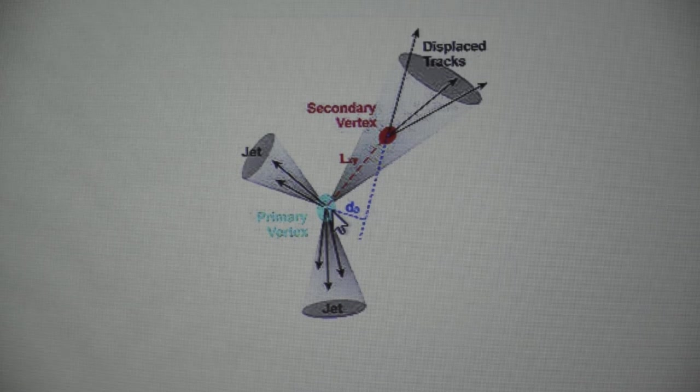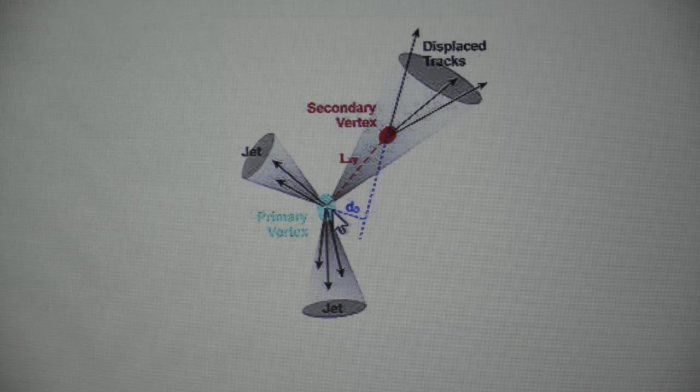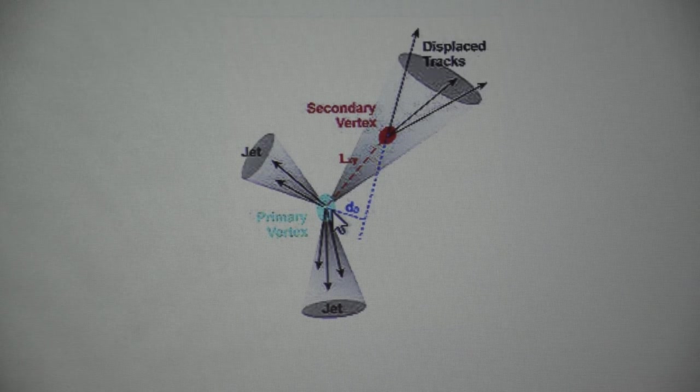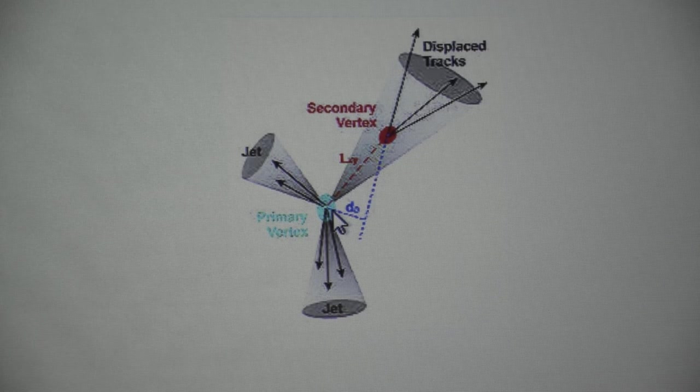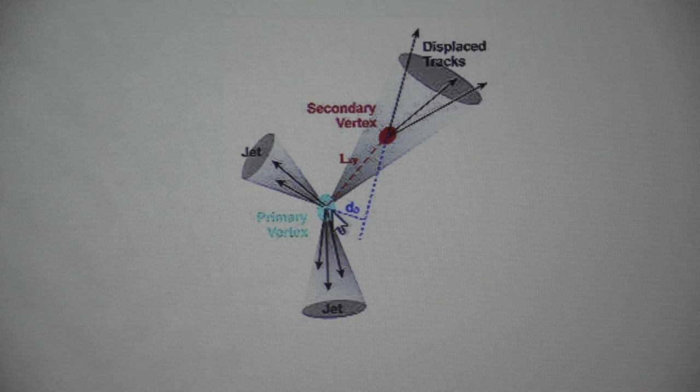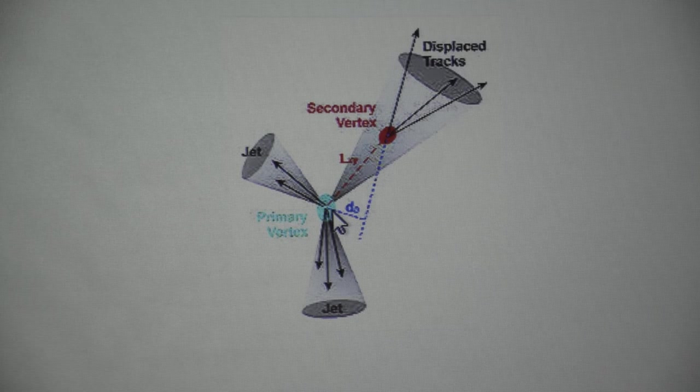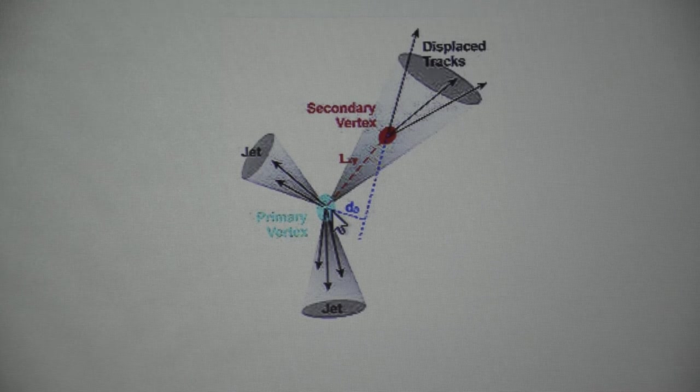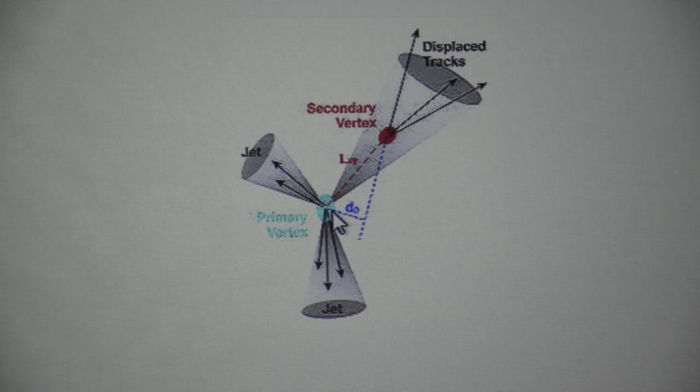It can only come from a gluon splitting into BB bar but this gluon splitting is of probability relatively small. So, suppose you don't have to talk about any specific signal. Think of a signal which has at least one B quark in it.